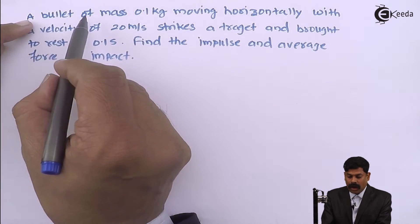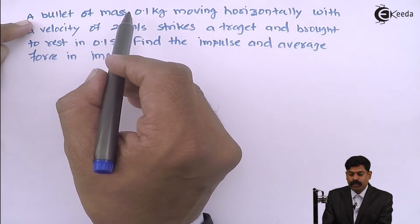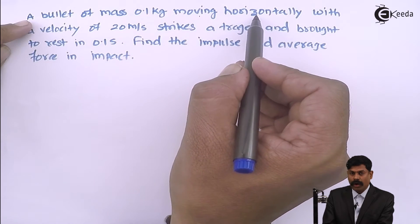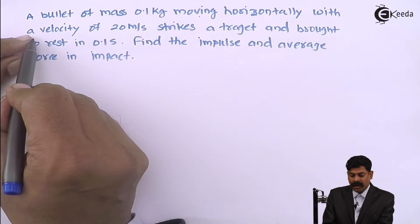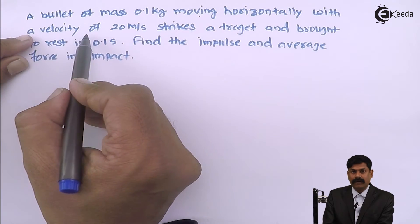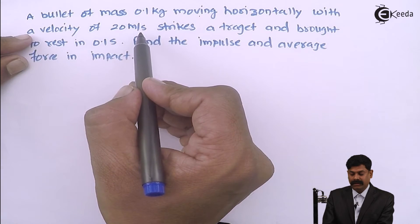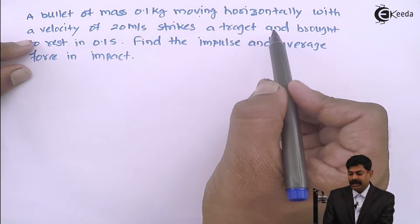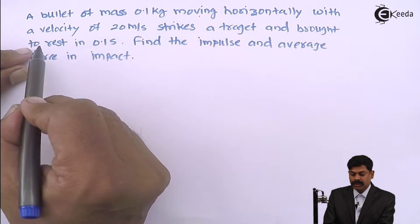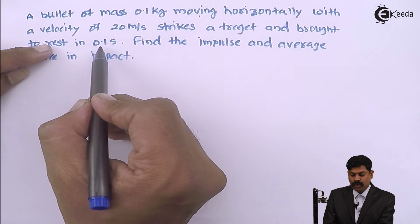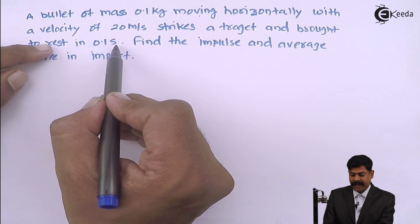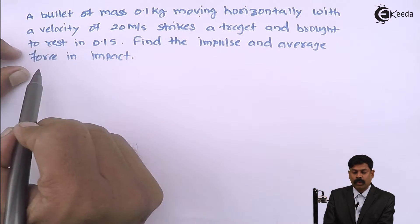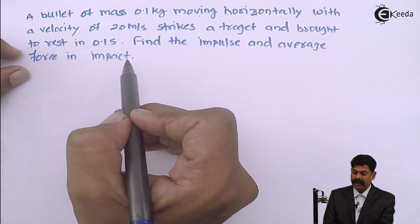Now the next sum: a bullet of mass 0.01 kg moving horizontally with a velocity of 20 meter per second strikes a target and is brought to rest in 0.1 second. Find the impulse and the average force of impact.